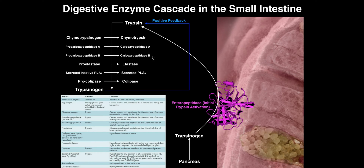Trypsin also activates procarboxypeptidase B into carboxypeptidase B. And we see here it catalyzes some of these other reactions: proelastase activation, phospholipase A2 activation, and procolipase activation. These latter two don't actually act on proteins — they're going to be acting on lipids. But the point is trypsin is going to be responsible for the activation of all these. I want to demonstrate in pictorial form that trypsin is actually the enzyme that directly activates all of these proenzymes into their active enzyme forms.